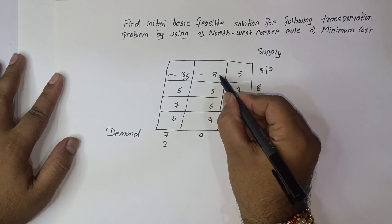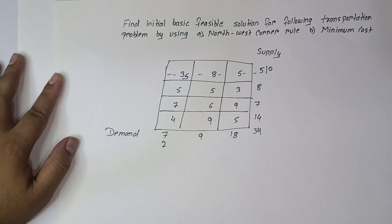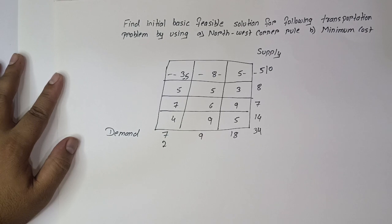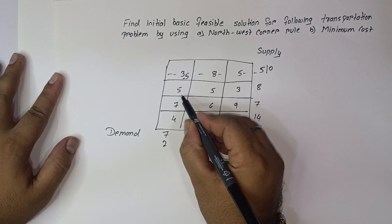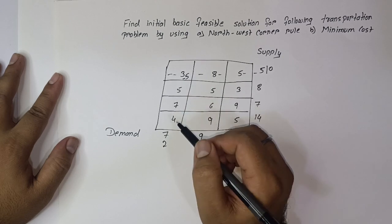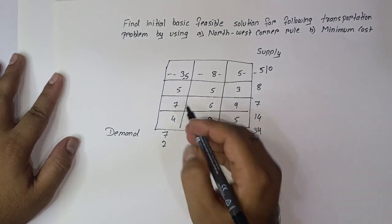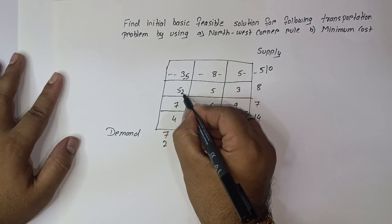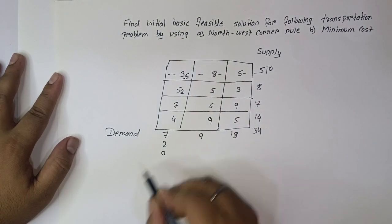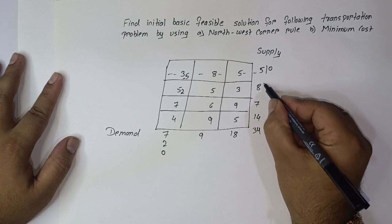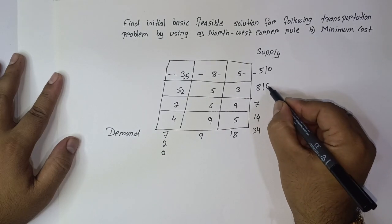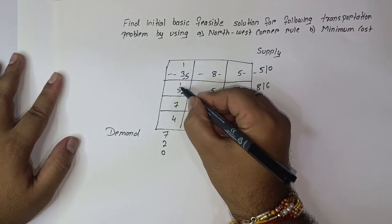Supply becomes zero and demand becomes 2. Since the supply is exhausted, we cancel this row — no more allocation will happen in row one. Now our new northwest corner is the cell with value 5. Supply is 8 and demand is 2, so the minimum is 2. We allocate 2 here. Demand becomes exhausted and supply becomes 6, so we cancel this column.